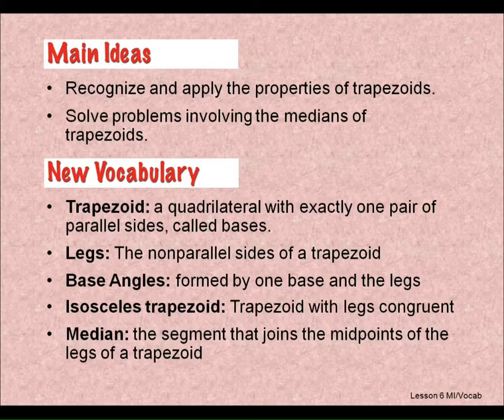And then we have a median, and we have a theorem about the median we'll get to in just a second. A median of a trapezoid joins the midpoints of the legs. Median of a trapezoid. So we have a median of a triangle—it went from the midpoint of one side to the vertex of the other. Here we're going from midpoint to midpoint in that trapezoid.